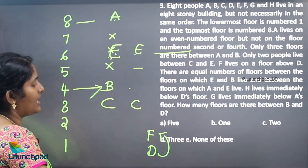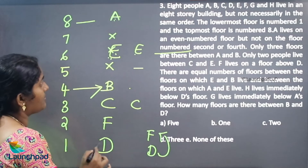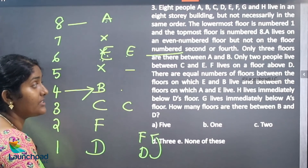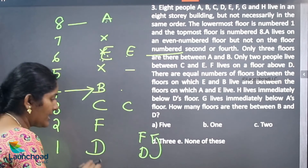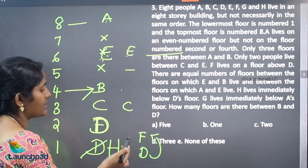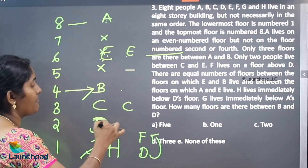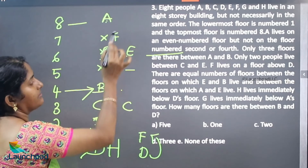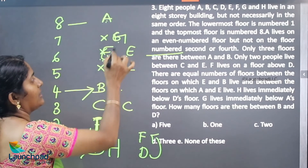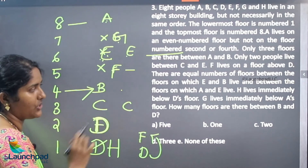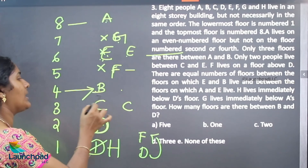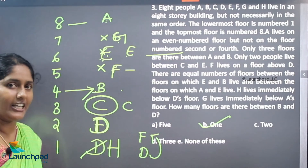H lives immediately below D's floor, so I can place D here and H lives just below D. F will be before A — F will be coming here or here. G lives immediately below A's floor, so G will be here. Therefore F will be coming here. How many floors are there between B and D? Only 1 floor. Option B is the correct answer.